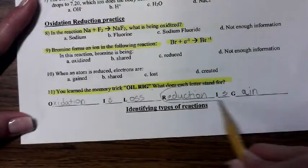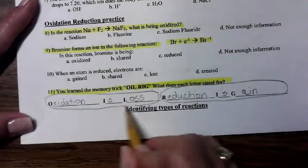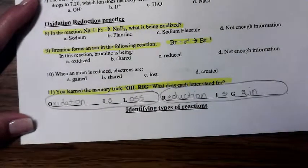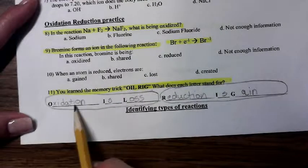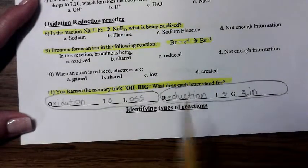RIG, reduction is gain of electrons. So why are these two things important? Because they will help us keep it straight. Redox reactions can be tough. So it's an easy way for us to remember if you're losing electrons, that's an oxidation reaction. If you're gaining electrons, that's a reduction reaction.